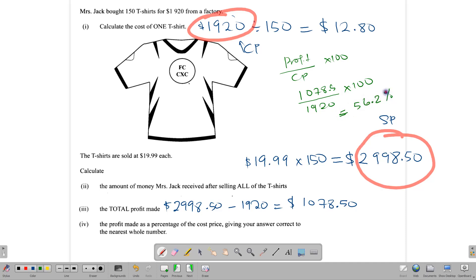And when you plug that into your calculator, in terms of percentage, it's going to give you 56.2. And the question says to write it to the nearest whole number. And the nearest whole number there would be 56%.